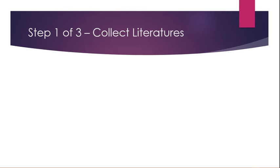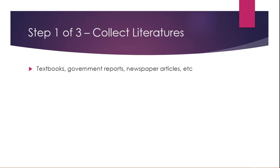Step number one out of three is to collect the literatures. We need literatures because we want to do a literature review. The first step is to focus on numerous types of literatures that will be relevant for your own research — for example, textbooks, government reports, newspaper articles, etc.